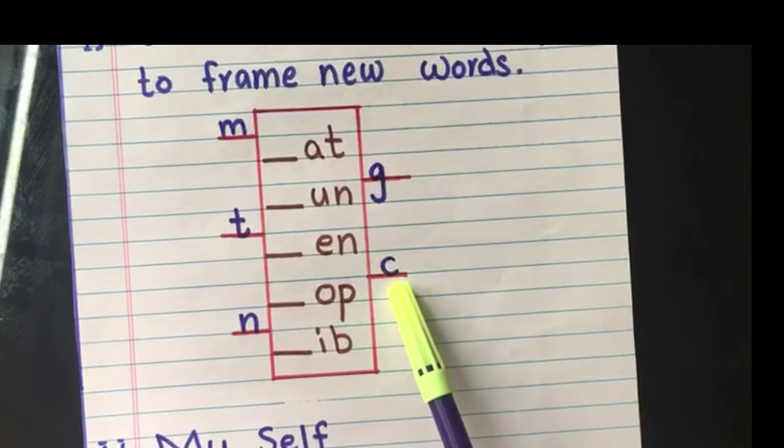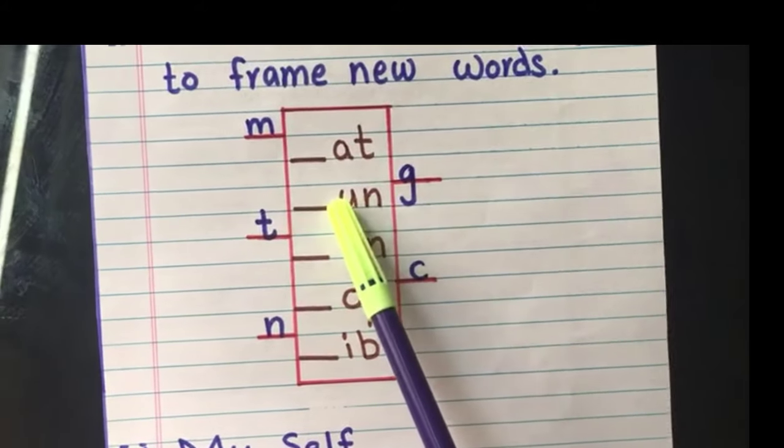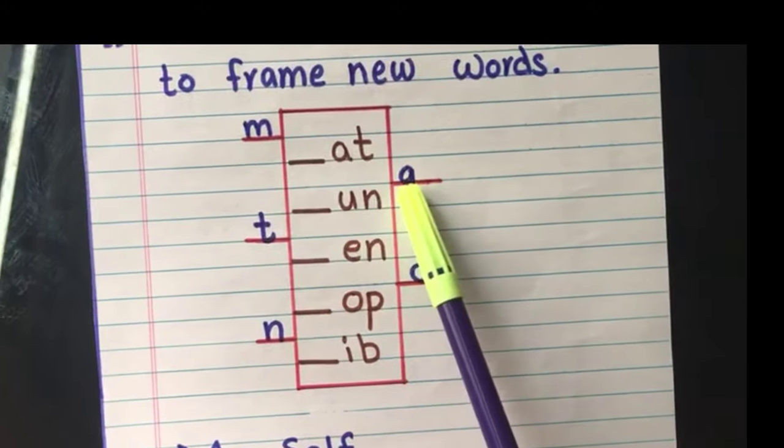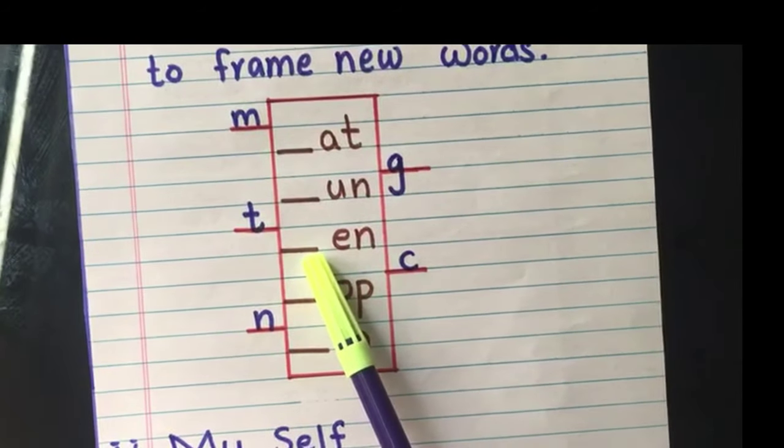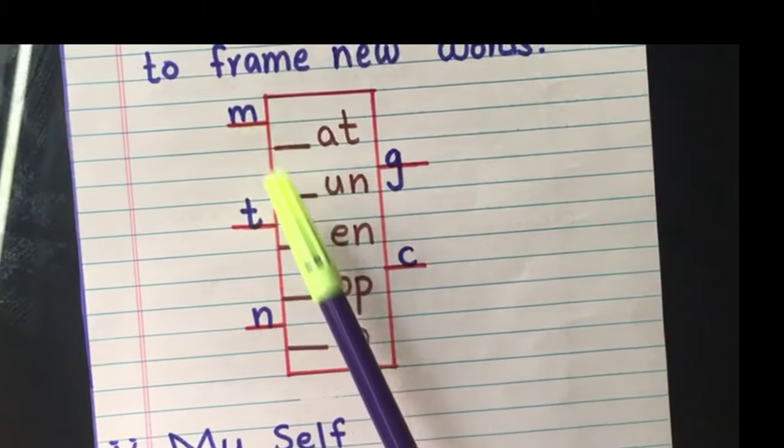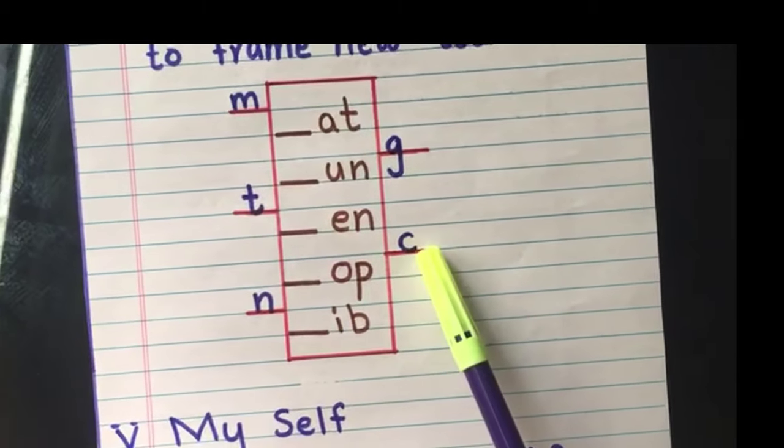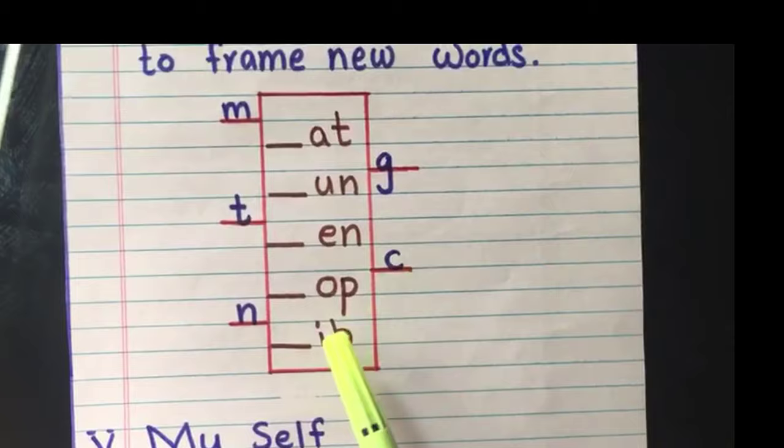It's something like mat, or cat, or ban. Gun, tan, ten. Like that, the child should frame the word using the letters from the grid.